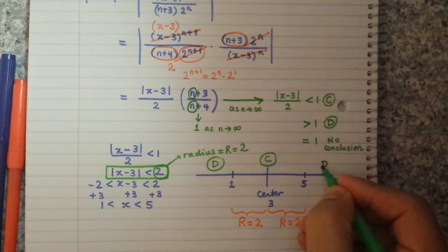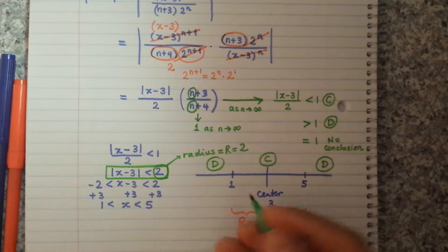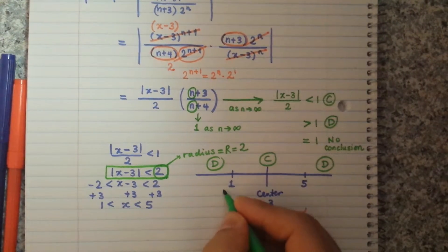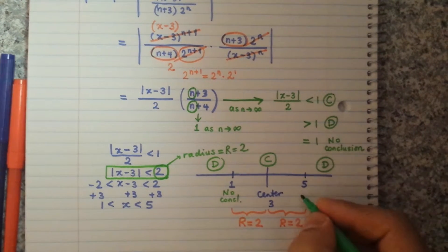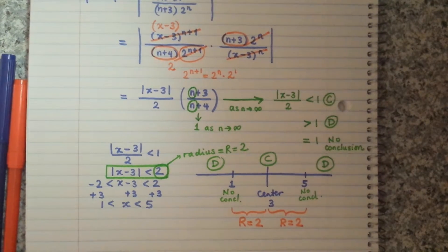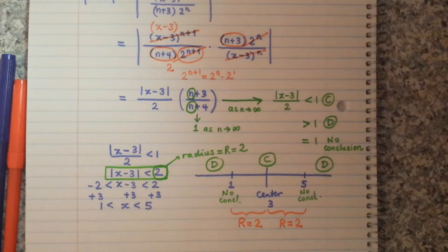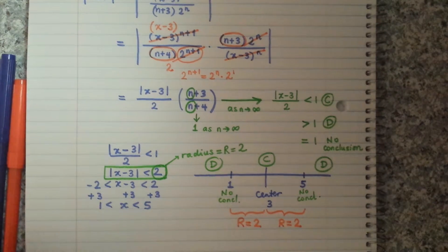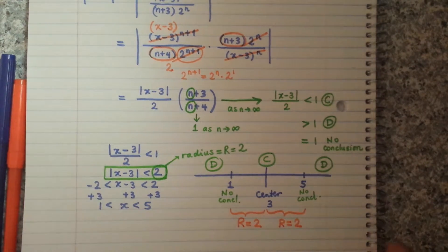Within 1 and 5 the series is convergent; outside of 1 and 5 it is divergent; and at x = 1 and x = 5 the ratio test gives no conclusion. These are the endpoints and we have to check them separately.